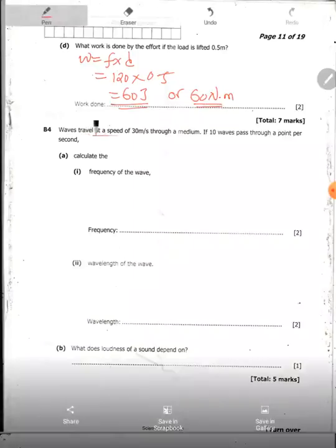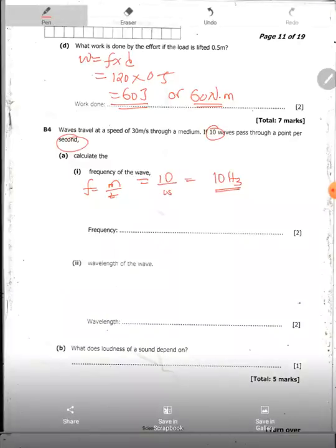Question B4 says waves travel at a speed of 30 meters per second through a medium. If 10 waves pass a certain point per second, calculate the frequency of the wave. Now frequency is equal to the number of complete oscillations over time taken. The number of complete oscillations here is 10 per second. So we have 10 hertz as frequency. If 10 waves pass through a point per second, frequency is the number of complete oscillations passing through a second. So the frequency is 10 hertz.